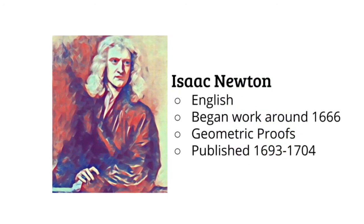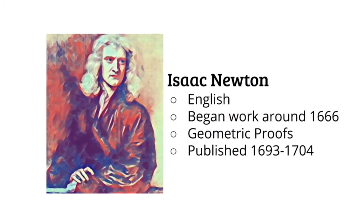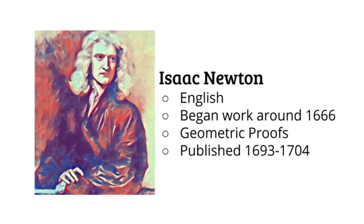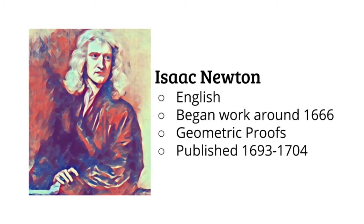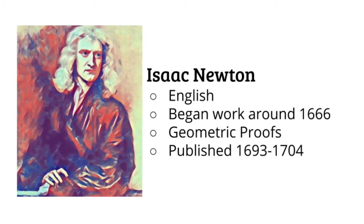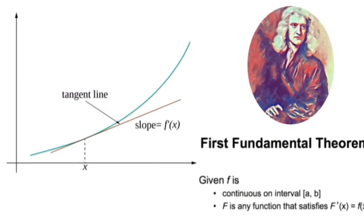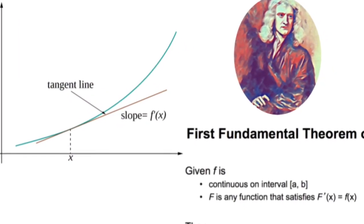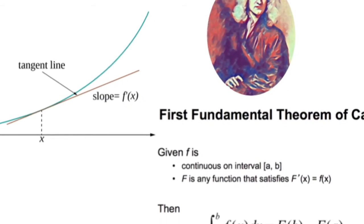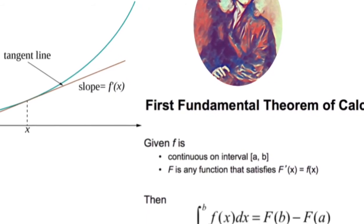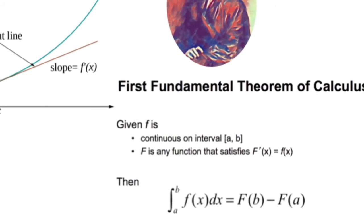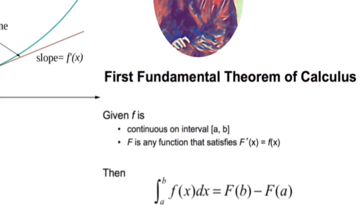Isaac Newton, an English physicist and mathematician, began his work on calculus around 1666. However, he published relatively none of his work until the time between 1693 and 1704. Newton started his work by attempting to find the slope of a tangent line to the curve at any point. Newton used mostly geometric proofs, which led him to discover differentiation and integration, and this resulted in him publishing the first fundamental theorem of calculus.